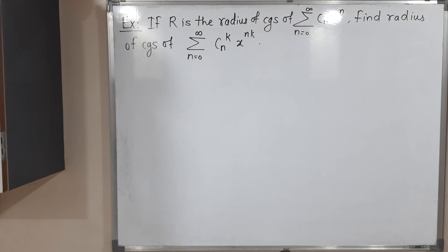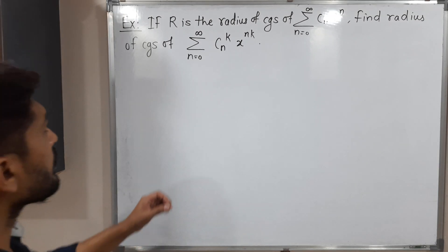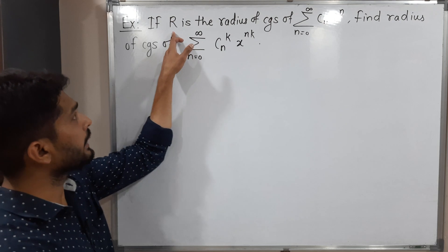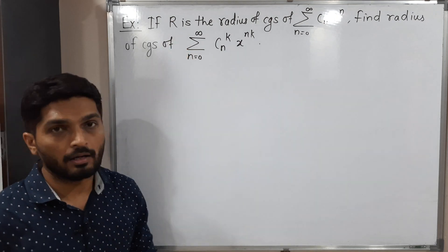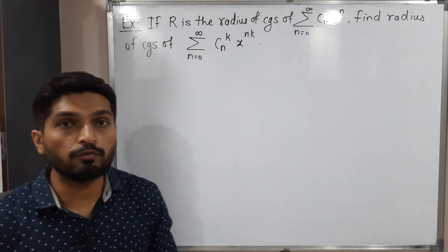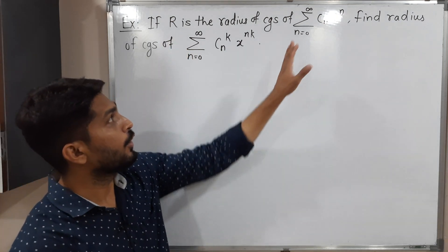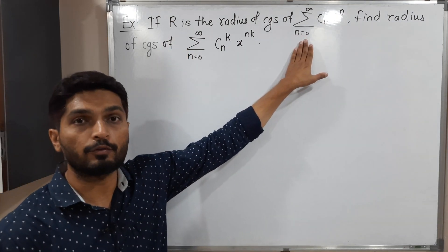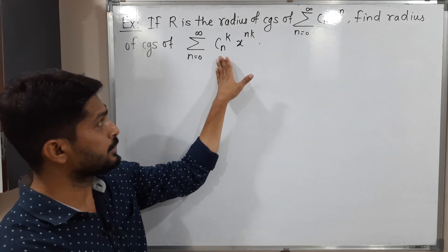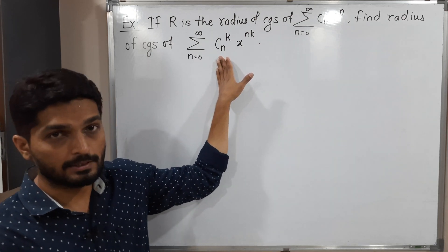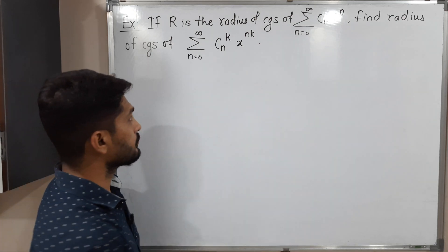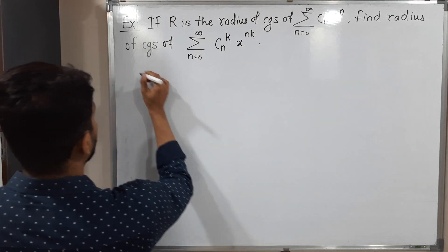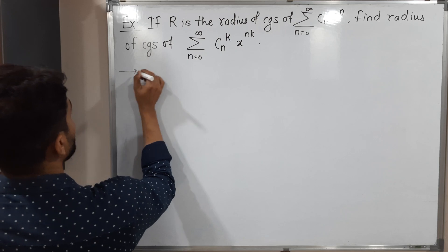Hi everyone. In this video we are going to discuss this example. They have given that capital R is the radius of convergence of a power series, and we have to find the radius of convergence of another power series. Let us start with the given information.